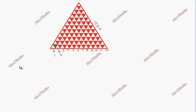Continuing the count: 1, 2, 3, 4, 5, 6, 7, 8, 9, 10, 11. Then the next row: 1, 2, 3, 4, 5, 6, 7, 8, 9, 10. So the white tile rows form a decreasing sequence.